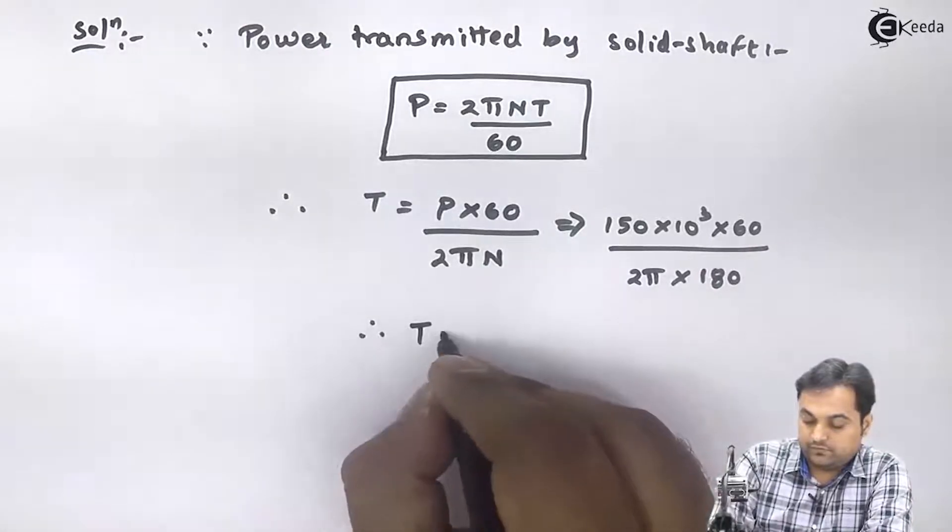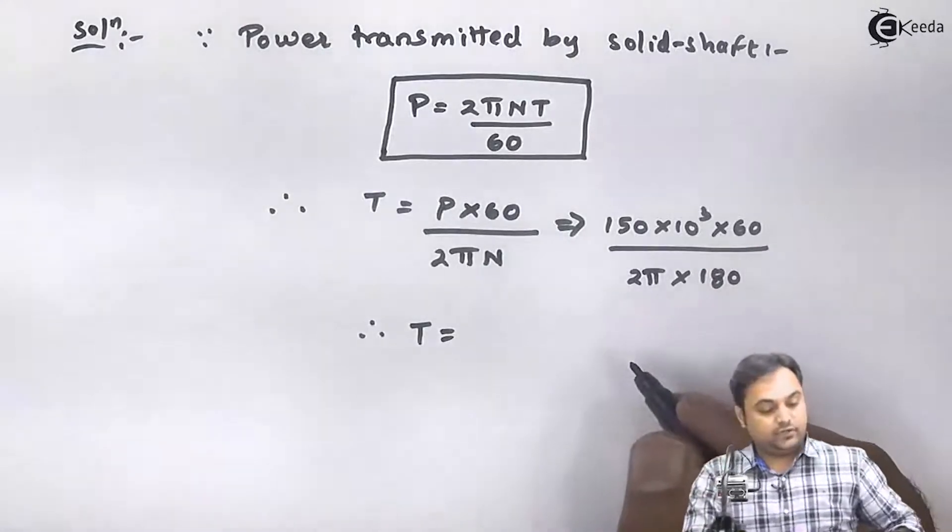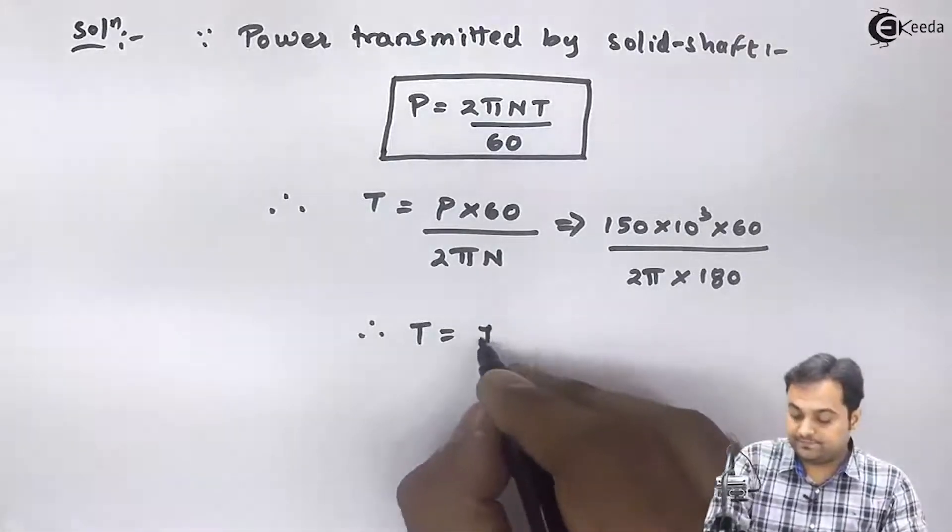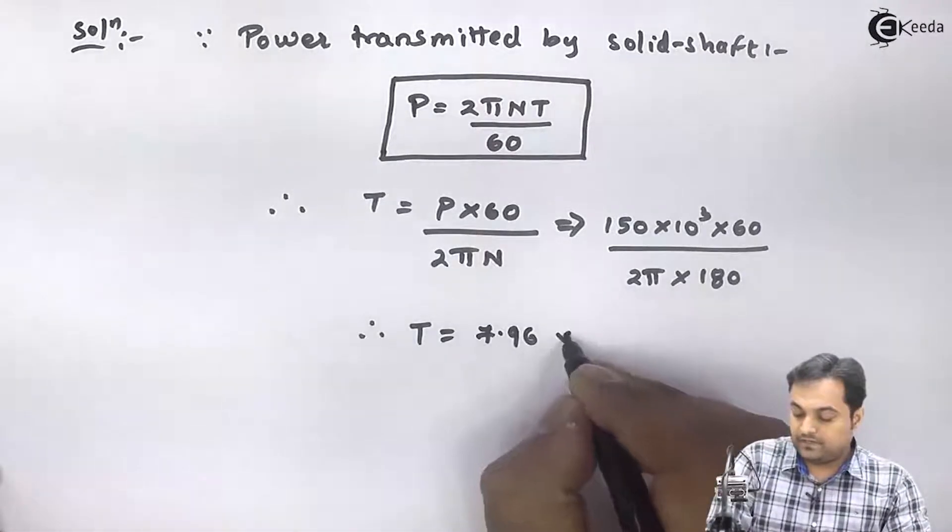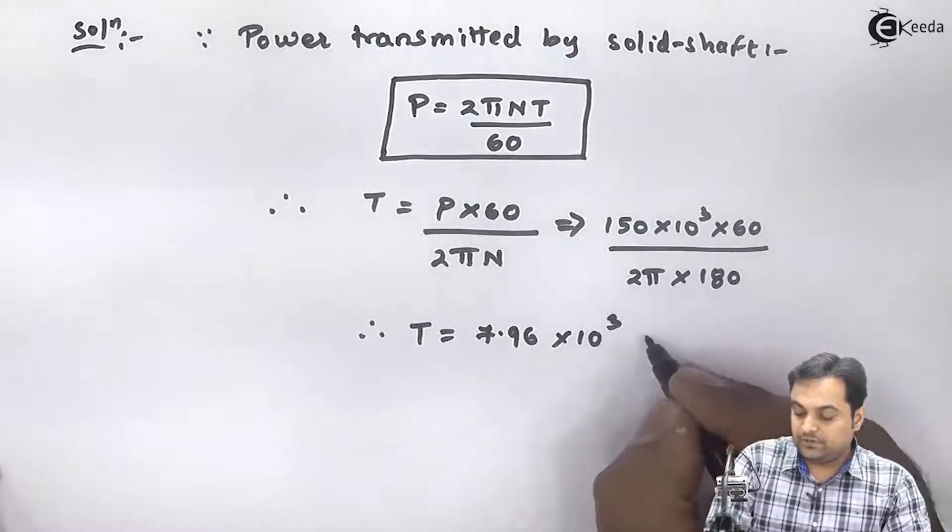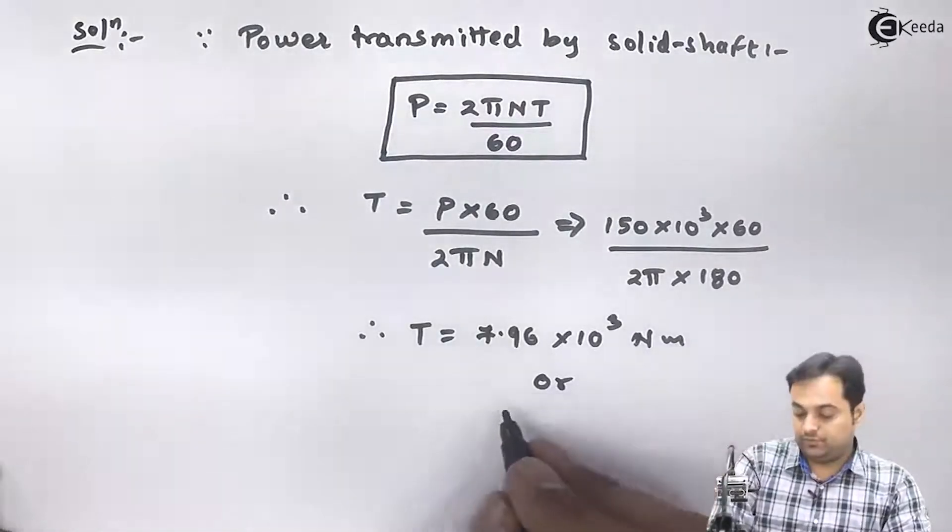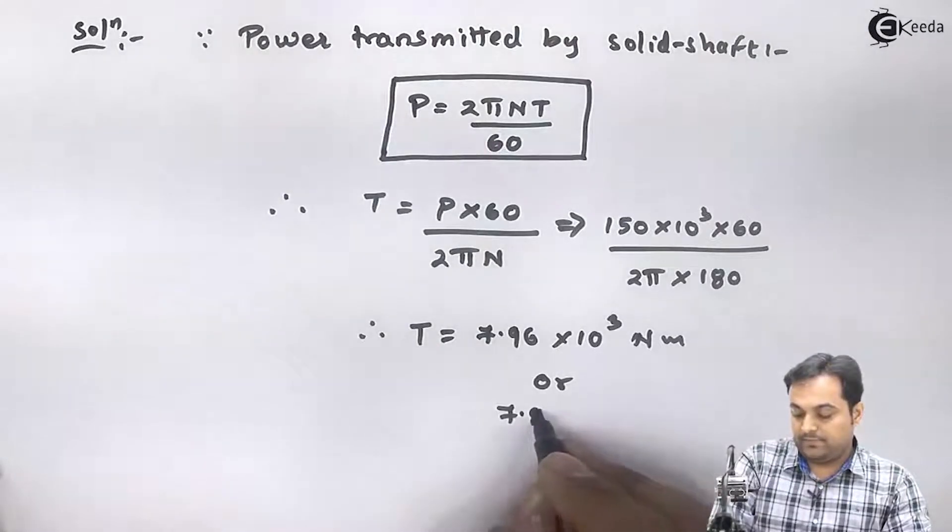So from this I will get the value of torque as 7.96 into 10 raise to 3 Newton meter, and I will convert this into Newton mm by multiplying with thousand.